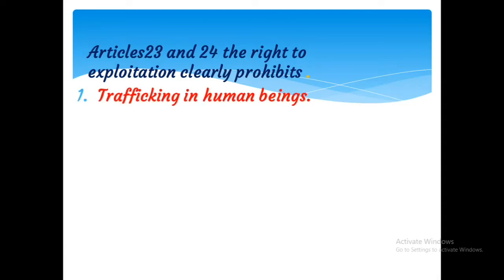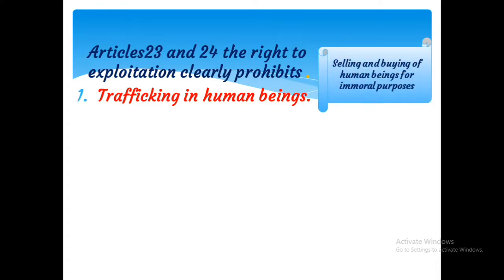This right against exploitation clearly prohibits trafficking in human beings. What is the meaning of trafficking? Trafficking means selling and buying of human beings for immoral purposes. Normally we are selling and buying products or things, but sometimes we are buying and selling human beings for immoral purposes — that is called trafficking.